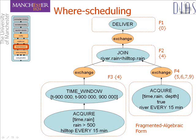Where-scheduling decides which query plan fragments are to run on which routing tree nodes. Fragments are placed with the aim to reduce the amount of data transmitted. This step results in the distributed algebraic form of the query, in which each fragment is allocated to a set of sites displayed next to the fragment identifier.